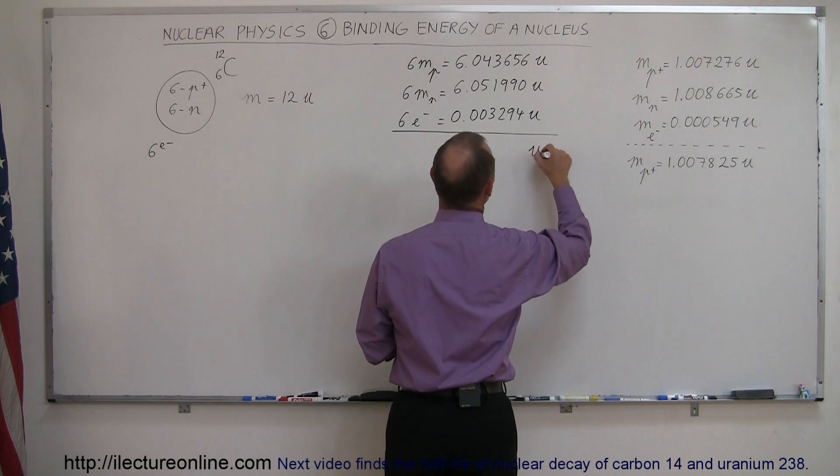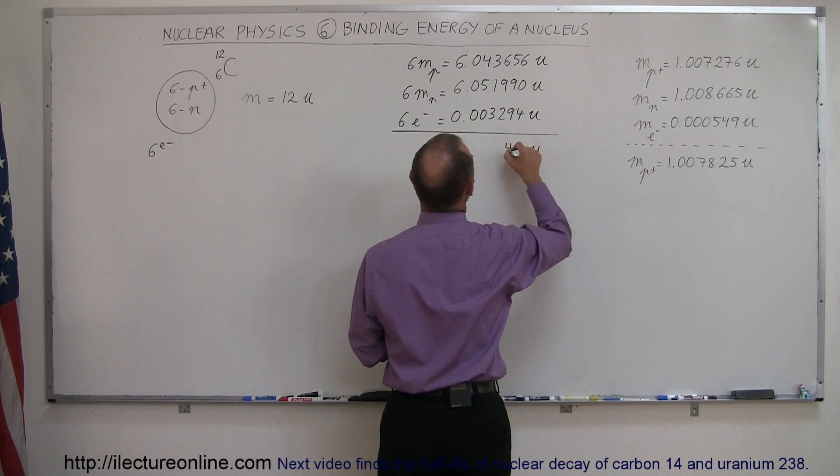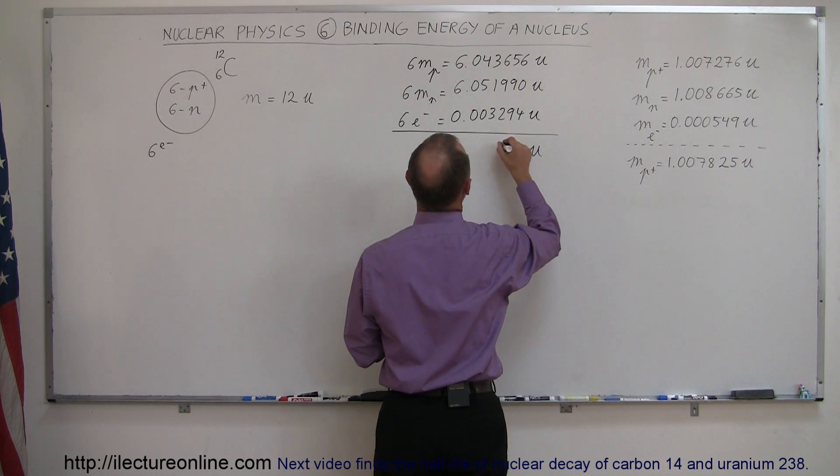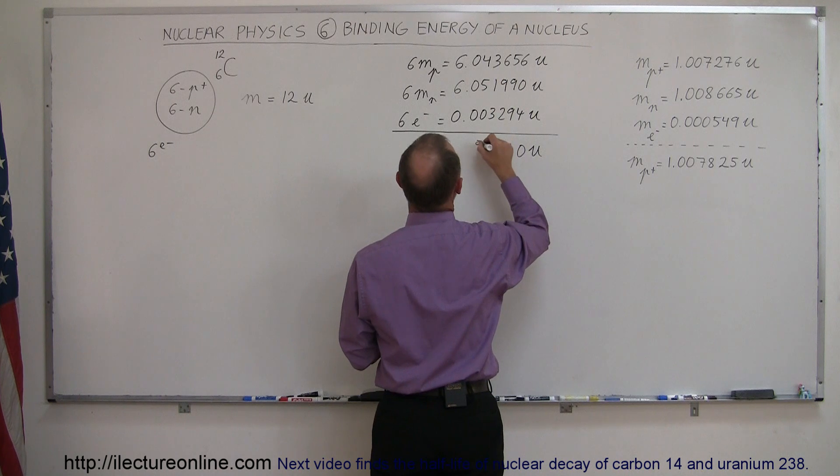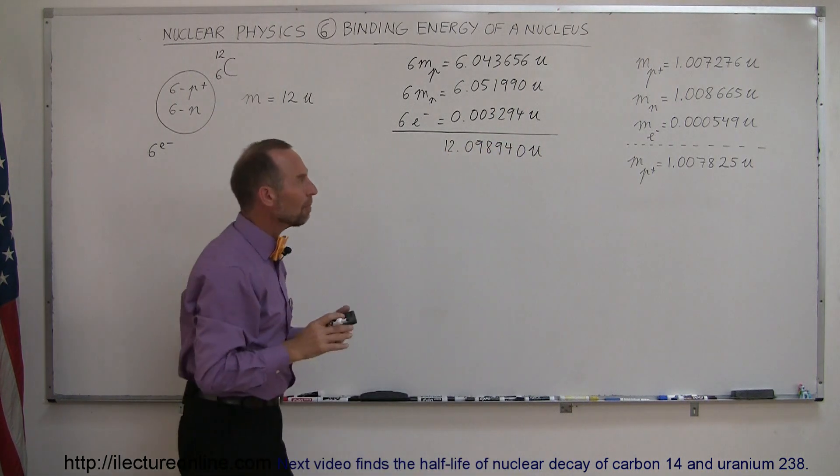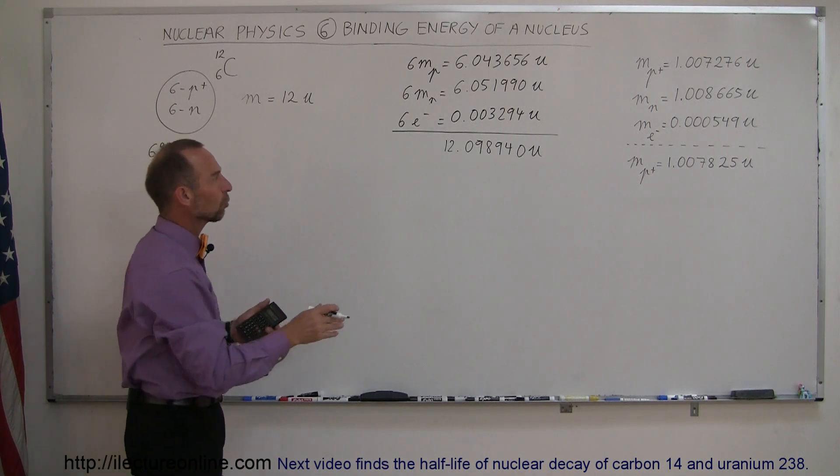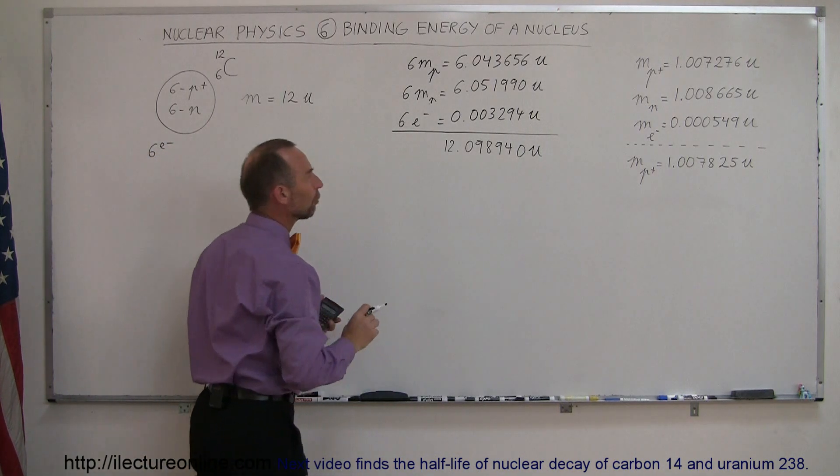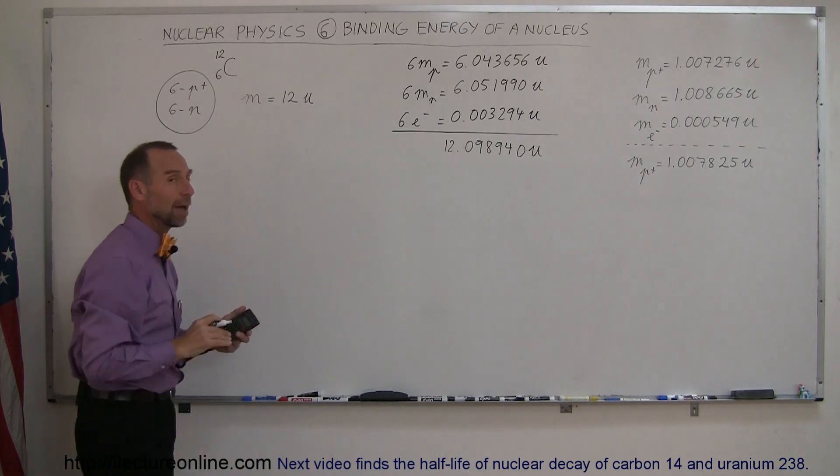I'm going to add them all together. So if you add up the mass of six protons, six neutrons and six electrons, you get 12.098940 atomic mass units, but put them all together, you only have 12 atomic mass units.